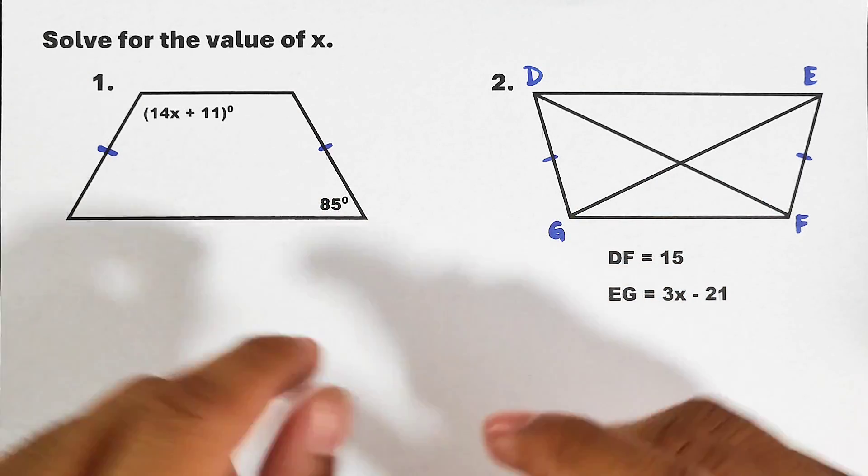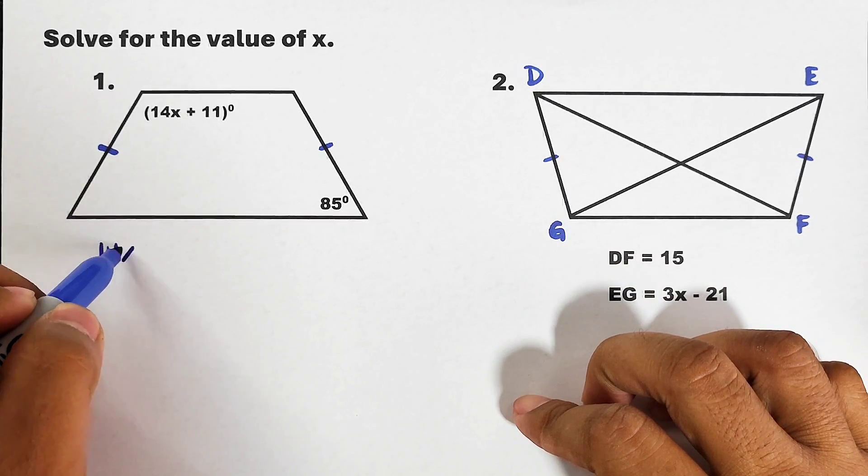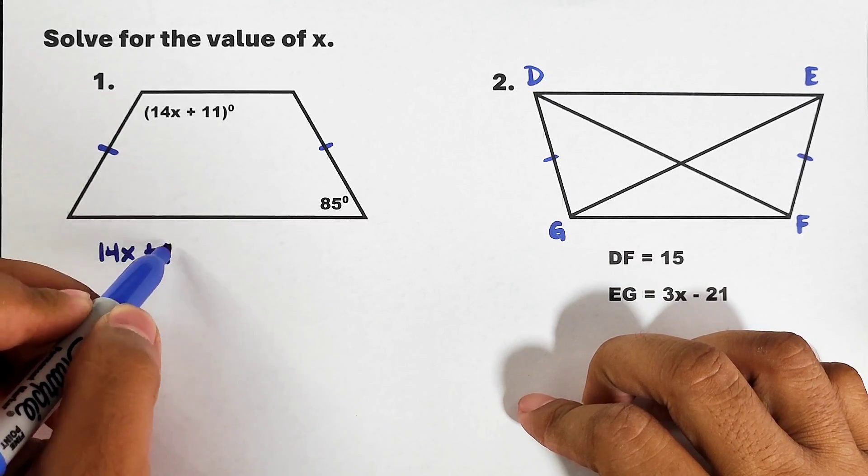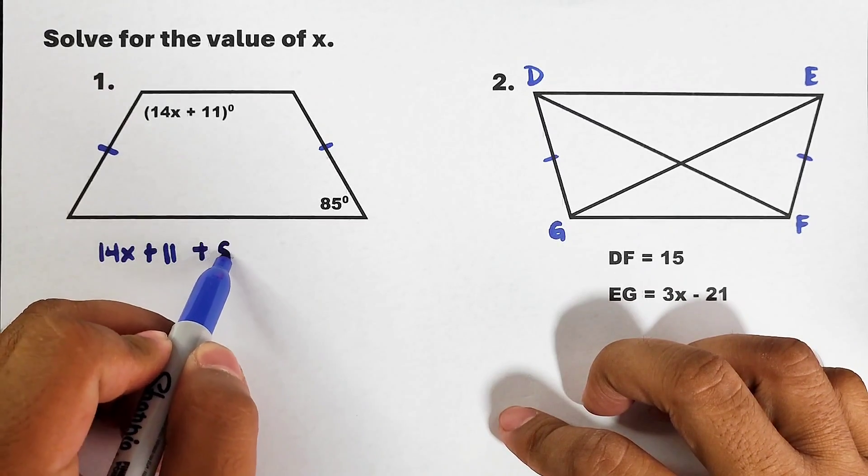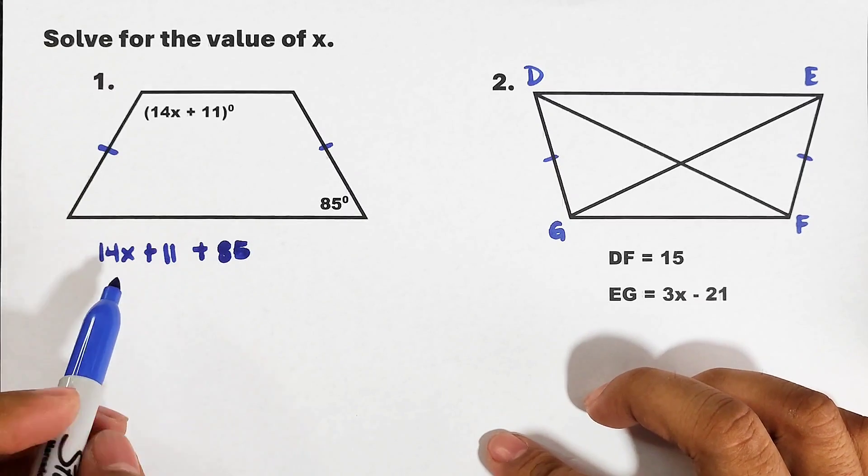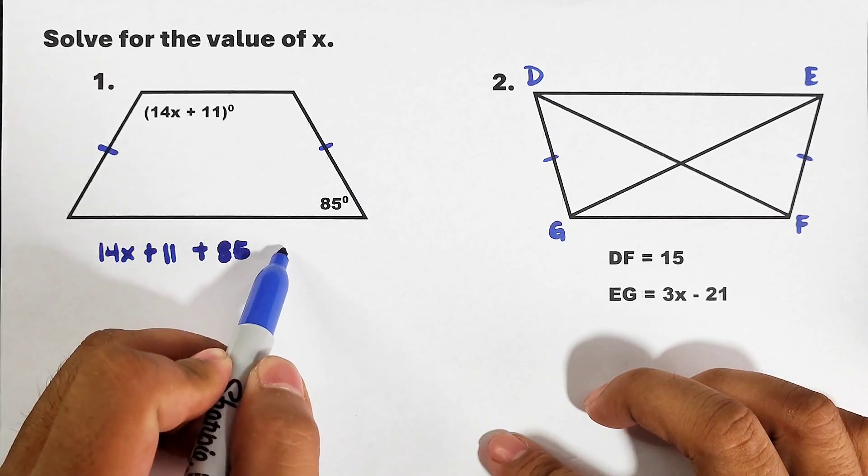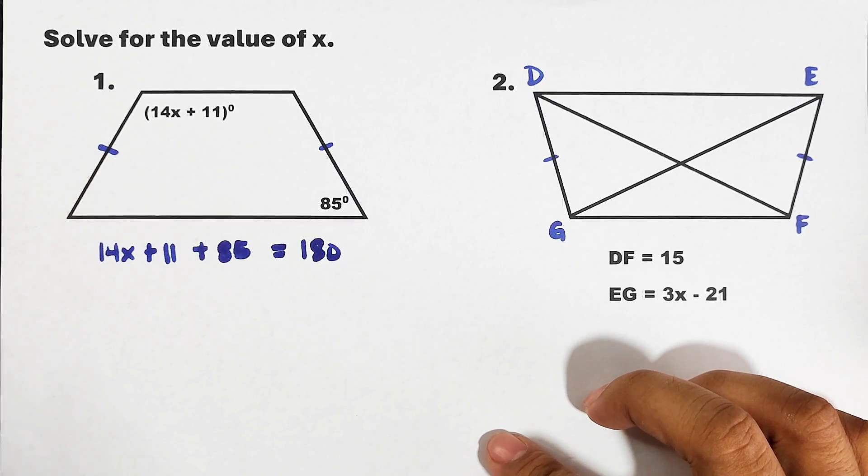So how are we going to solve for this? First, we will copy 14x plus 11, then plus 85. Again, we're doing this because we need to add them and their total is 180 because they are supplementary. Simplify this part: 11 plus 85, that is 14x plus 96 equals 180.